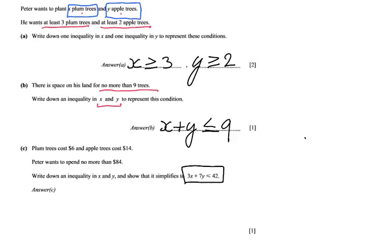So what is happening? Six dollars for a plum tree, so six times X plus fourteen dollars for an apple tree. That's not expensive by the way, but okay. Fourteen Y. That would be the amount of money you will have to pay. Six dollars times every plum tree plus fourteen dollars times every apple tree. And that has to be smaller or equal to eighty-four. So the total amount of money Peter wants to spend has to be smaller or equal to eighty-four.